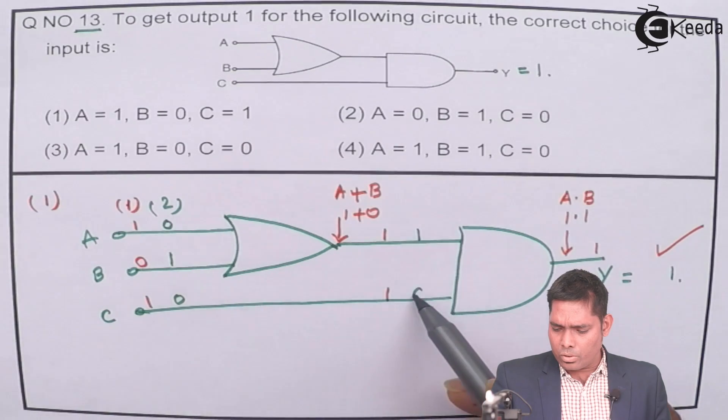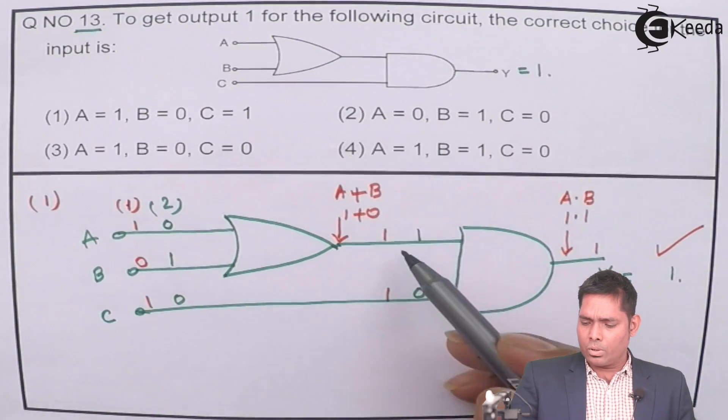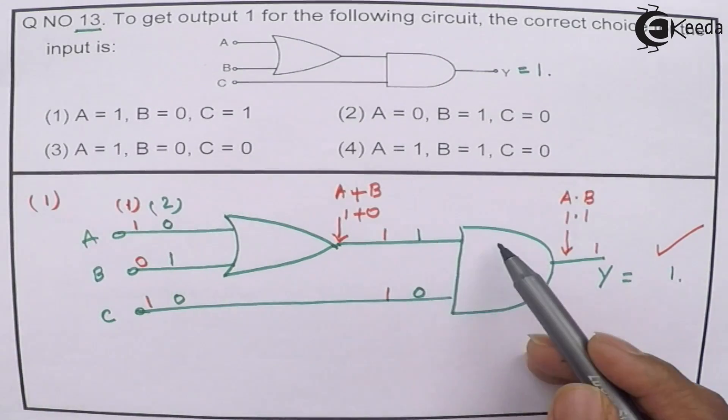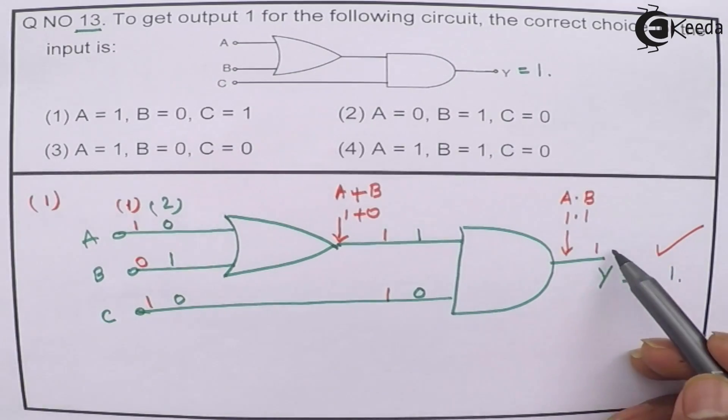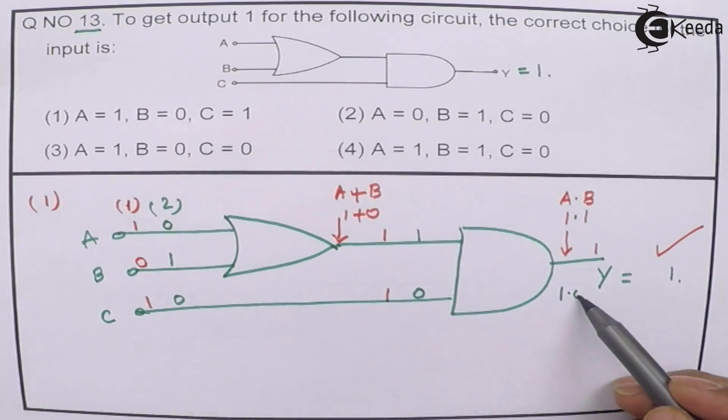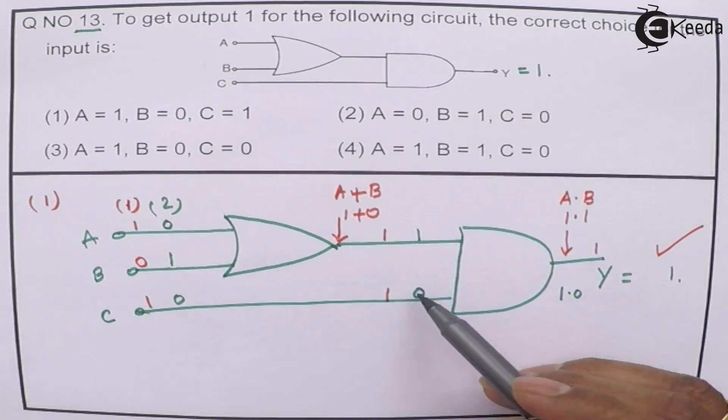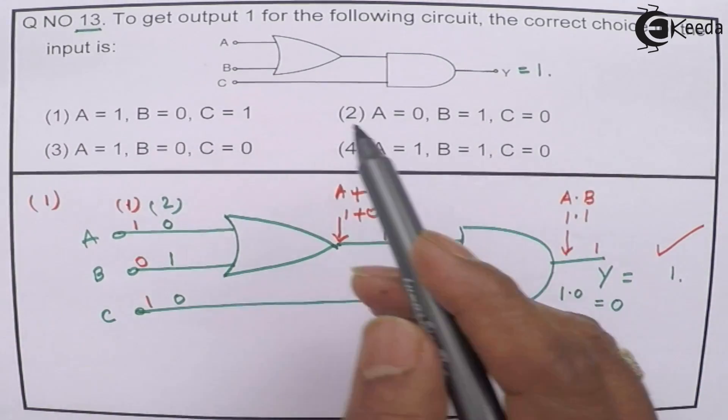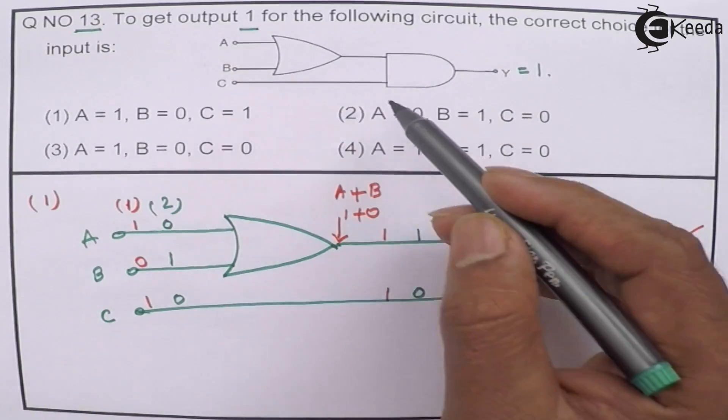This is 0, so 0 is there. Because 1 plus 0 is again the same, 1 plus 0 is 1 here. And this is 0. The AND gate is 1 dot 0, so 1 dot 0 will give 0. But I want 1 here, so this is not the answer.